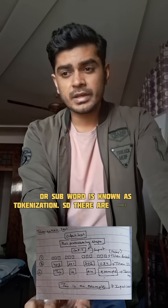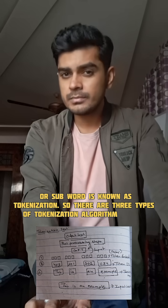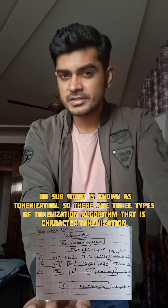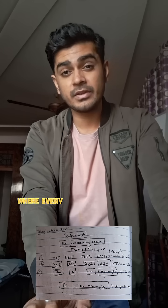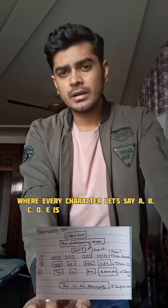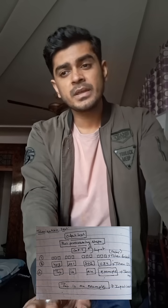There are three types of tokenization algorithms. The first is character tokenization, where every character — let's say A, B, C, D, E — is converted into a token.